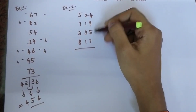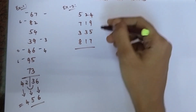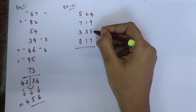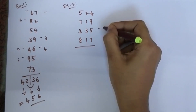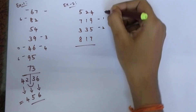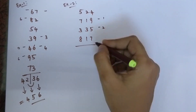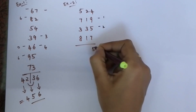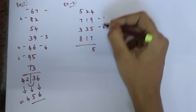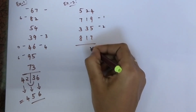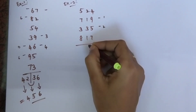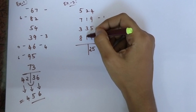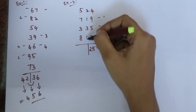Now let's see example 2. Again I am going to add all the single-digit numbers using the bar method. 7 plus 5 is 12, 2 plus 9 is 11, 1 plus 4 is 5. There are 2 bars, so I get 25.